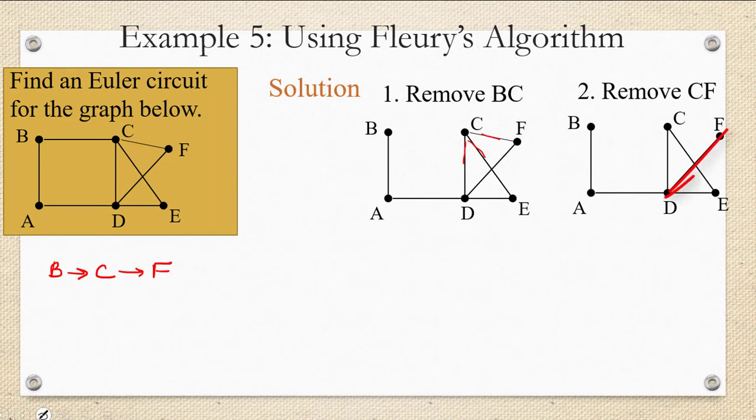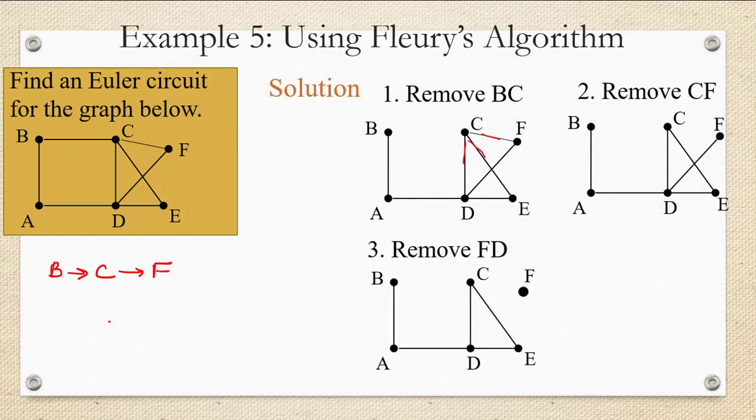From F, we don't have any option. We have to go to D because there's no other edge that connects to F. So I've removed F to D, so let's make a note of that.